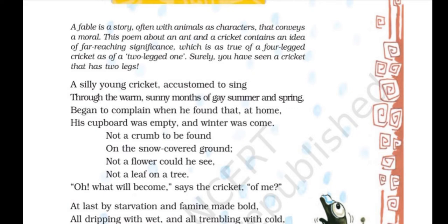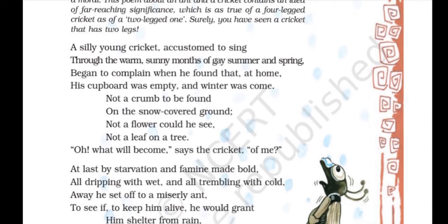'Not a crumb to be found on the snow-covered ground, not a flower could he see, nor a leaf on a tree.' All the grounds were covered with snow and there was not a single crumb. Crumb means a small piece of bread — there was not a bread crumb on the ground, no flower, no leaf, nothing — everything was white with snow. 'Oh, what will become of me?' says the cricket. When he saw there was nothing to eat, nothing left on the ground, he got worried and started saying, 'ab mera kya hoga pure winters' — what will become of me this winter?